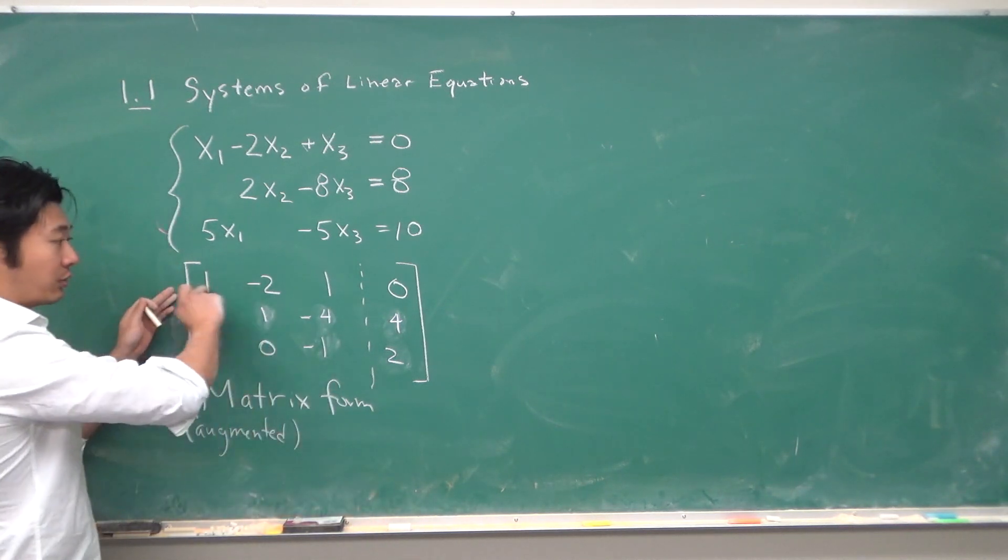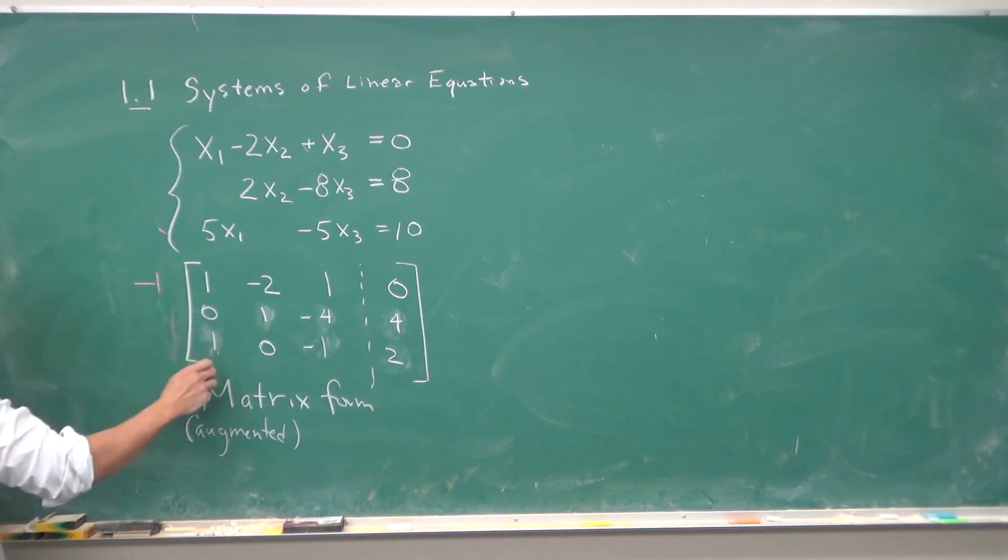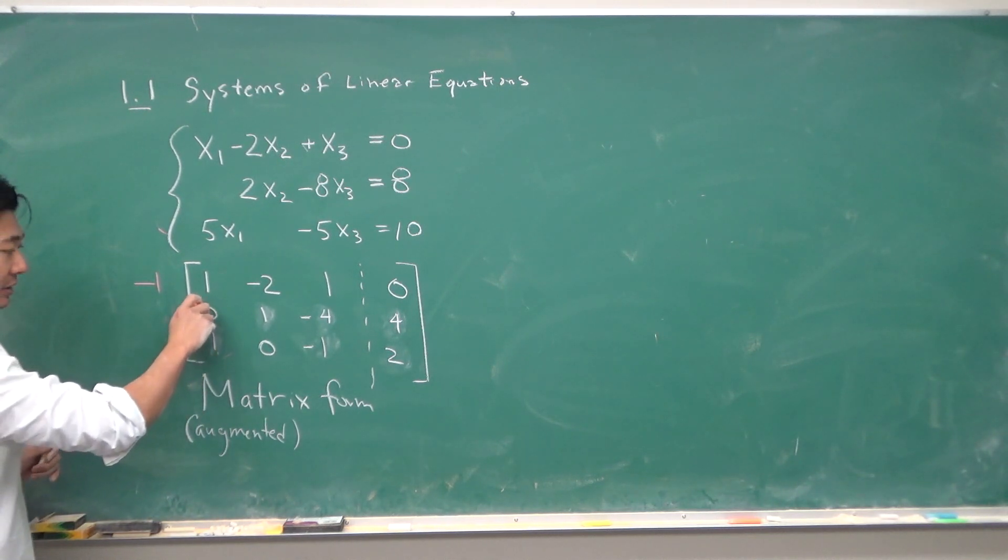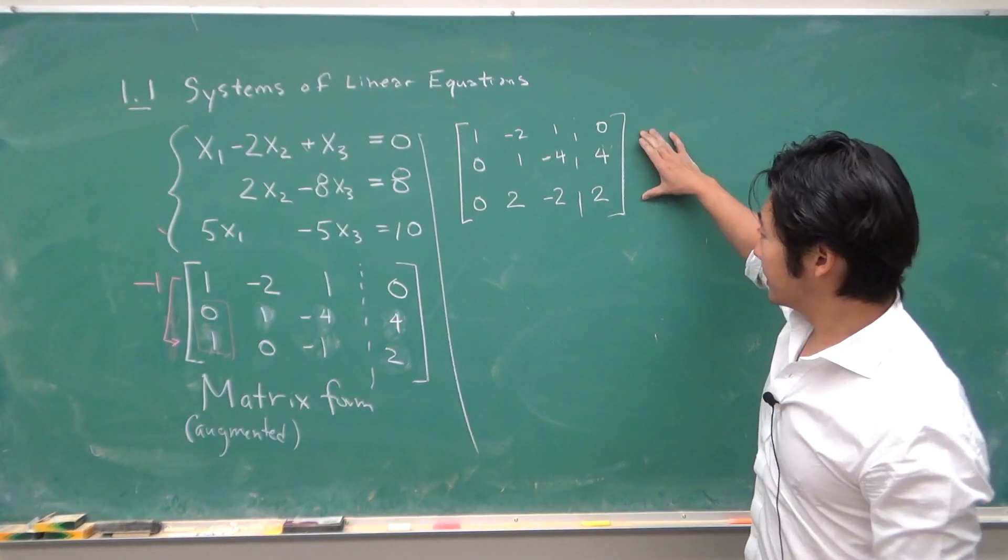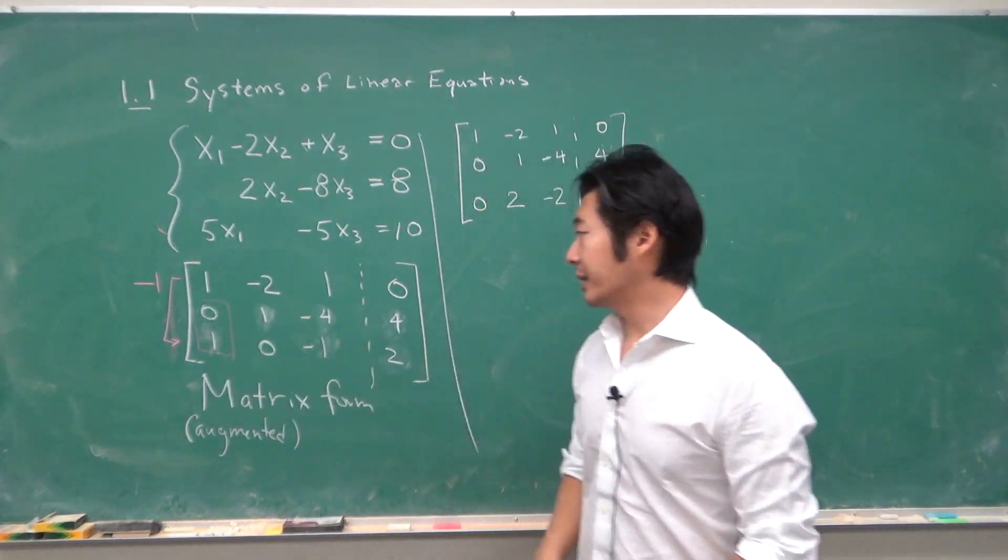And then multiply this row by a number to get rid of this. The goal is to first make these numbers all zeros. This is already zero so there's nothing to do. We want to make this zero. We can do that by multiplying by negative 1 and add again into here.